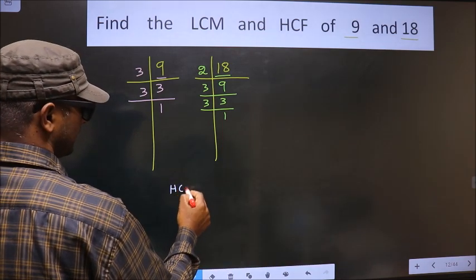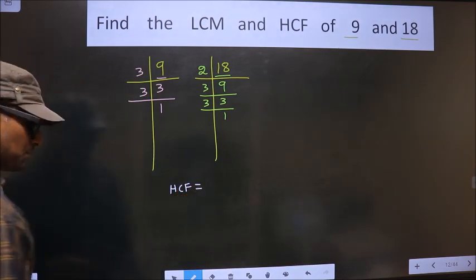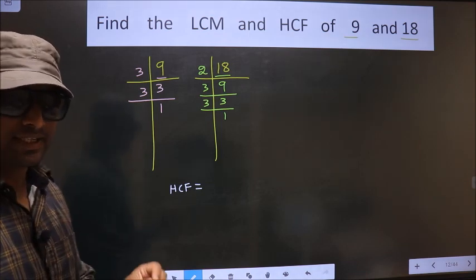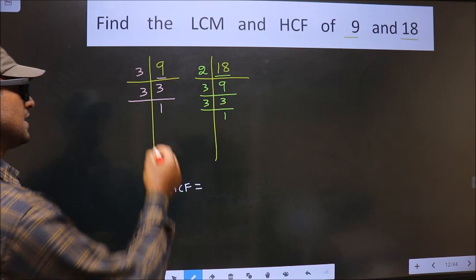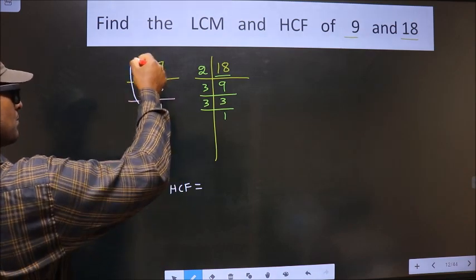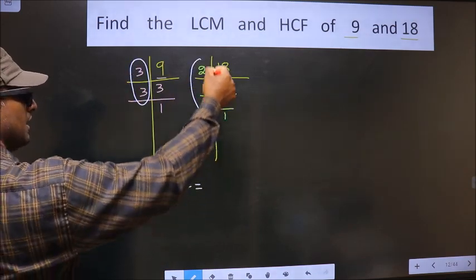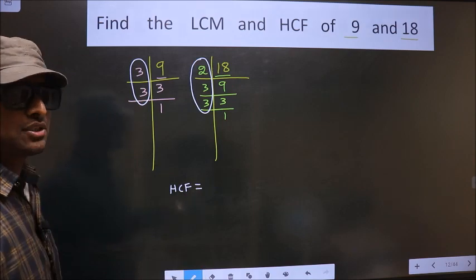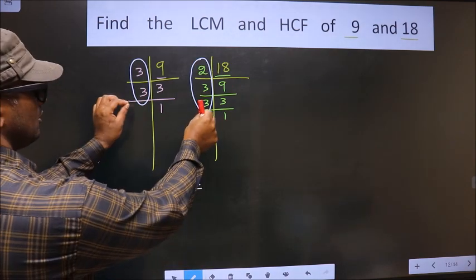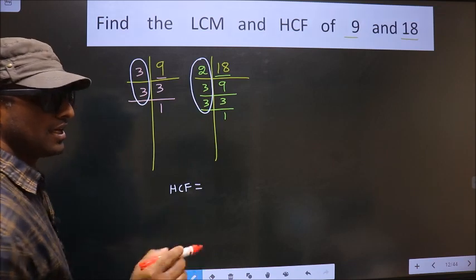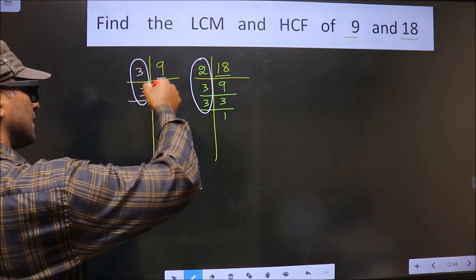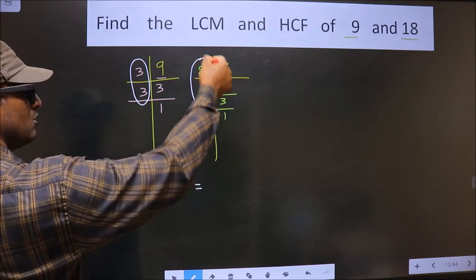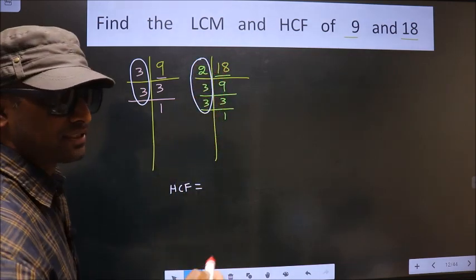So now our HCF is the product of numbers that are present here and also here. We should find the numbers that are present in these two places. I repeat, we should find the numbers that are present here and also here. So let us find.